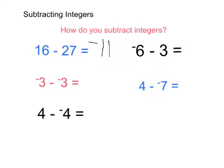But when we have problems like negative 3 minus negative 3 and 4 minus negative 4, sometimes students think that both of those have an answer of 0. But in reality negative 3 take away negative 3 is 0. But 4 take away negative 4 is positive 8.